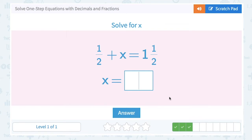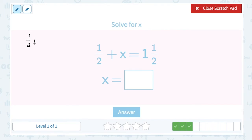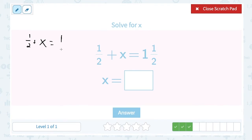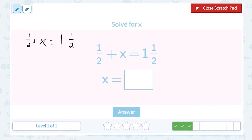Okay, 1 half plus x equals 1 and 1 half. So let's write this out. Now we want to get that x alone. I have 1 half plus x. If I take 1 half away, 1 half minus 1 half is just 0, which is the same thing as x.